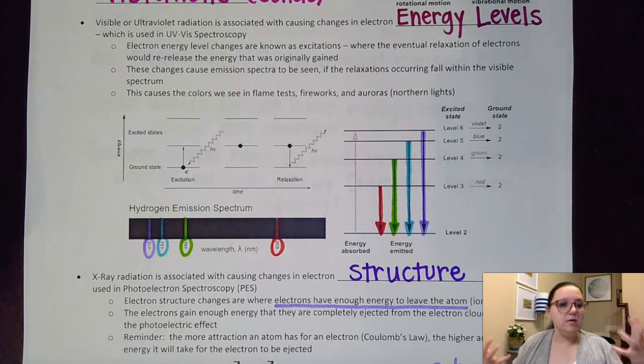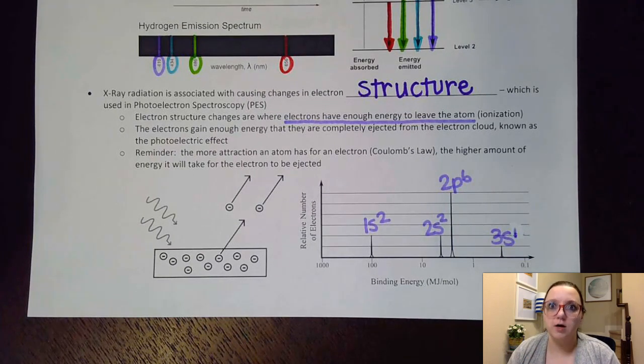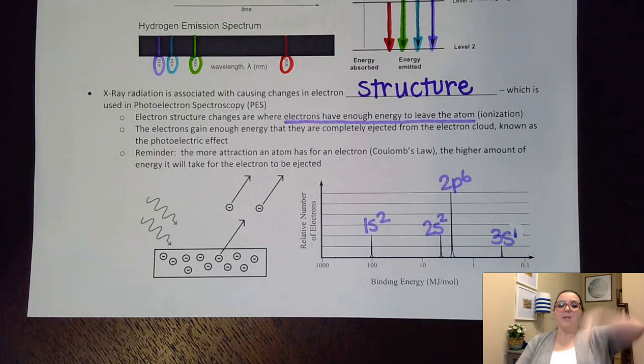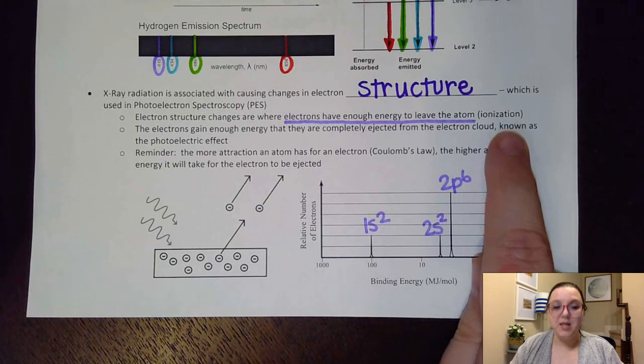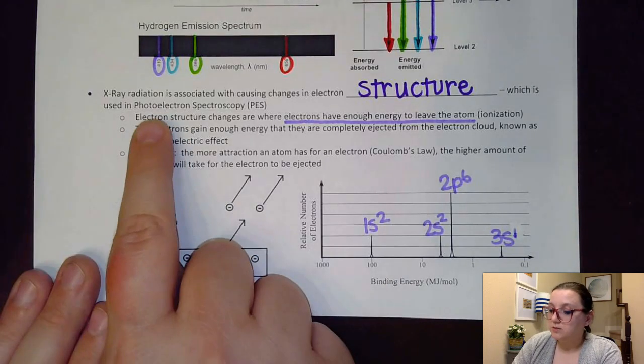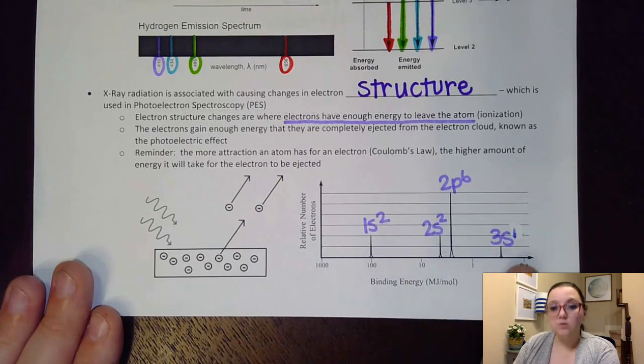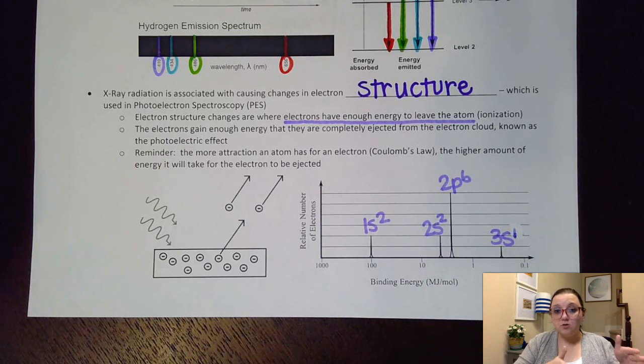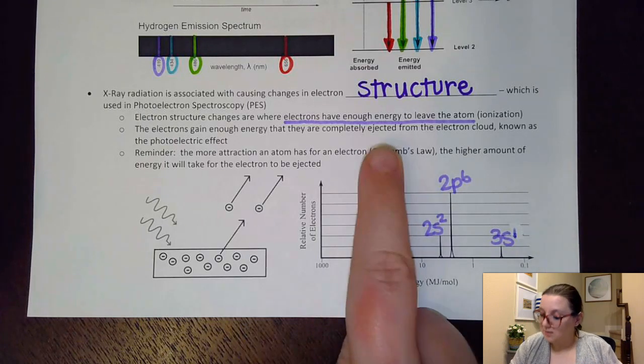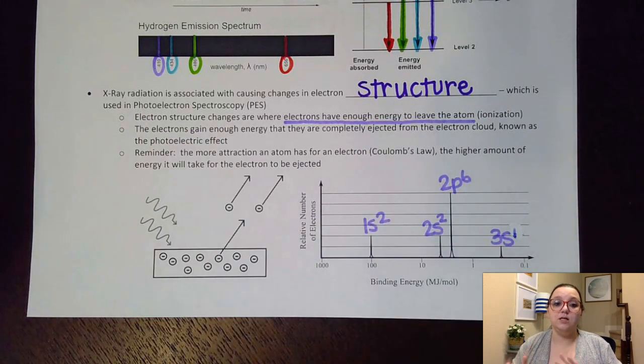All right, let's say I up the energy even more and I get all the way to x-ray radiation. X-ray radiation is associated with causing changes in electron structure. So now, all of a sudden, we're not feeding enough energy in it just to get it excited. Now, it's going to have so much energy that it's actually going to totally leave the atom and conduct what's called an ionization. Now, if this sounds familiar, it's because we've actually talked about this type of spectroscopy earlier on in the year. This is what is used in photoelectron spectroscopy, or PES. If you remember these lovely graphs right here, what these peaks showed is how much energy it takes to eject electrons out of our different sublevels. And so when we were measuring these energy amounts, we were measuring the amount of energy it takes to get electrons to leave. So this was tied to that x-ray radiation and causing those changes in the structure.